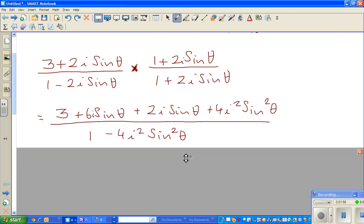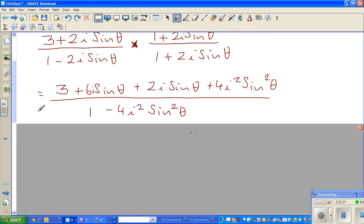Now I've done the simple expansion: 3 times 1 is 3, 3 times 2i·sin(θ) is 6i·sin(θ), then 2i·sin(θ) times 1 is 2i·sin(θ), and 2i·sin(θ) times 2i·sin(θ) is 4i²·sin²(θ). The denominator is the difference of two squares: (a - b)(a + b) = a² - b², which is 1 - 4i²·sin²(θ).